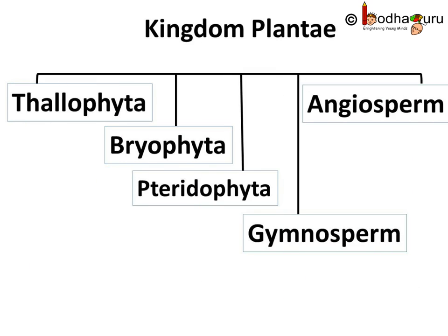So now we know the plant kingdom has five divisions: Thallophyta, Bryophyta, Pteridophyta, Gymnosperms and Angiosperms. Of these, Thallophytes, Bryophytes and Pteridophytes are cryptogames as they reproduce through spores, whereas Gymnosperms and Angiosperms are Phanerogames as they reproduce through seeds.